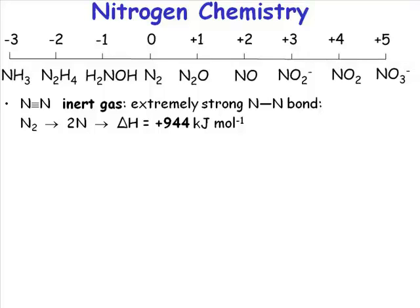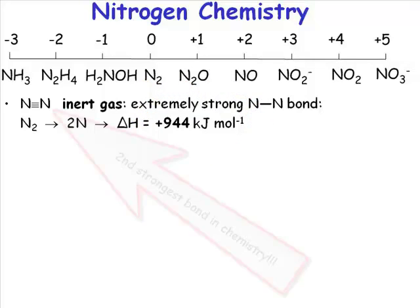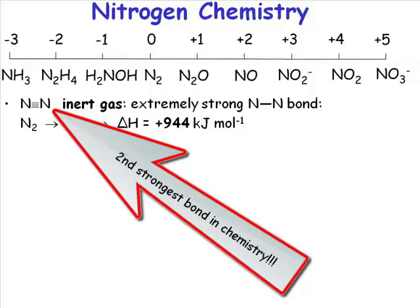Any reactivity of N2 requires us to break a triple bond, a non-polar triple bond, with a bond dissociation energy of plus 944 kilojoules per mole. That nitrogen-nitrogen bond is the second strongest bond in chemistry.